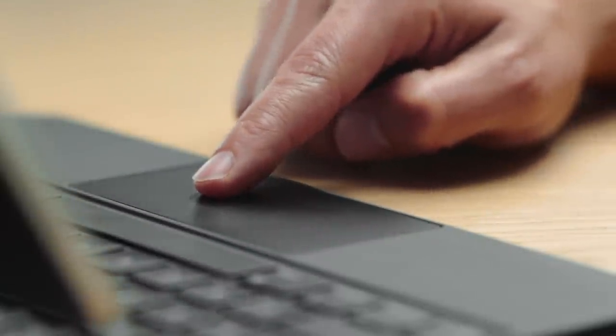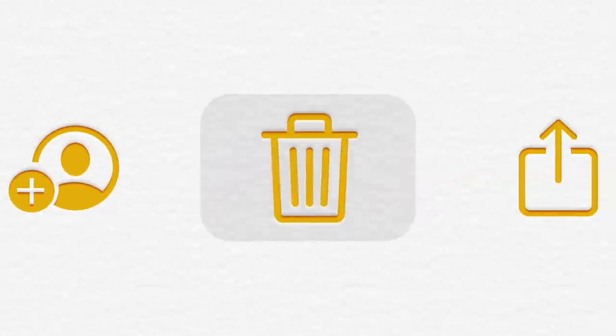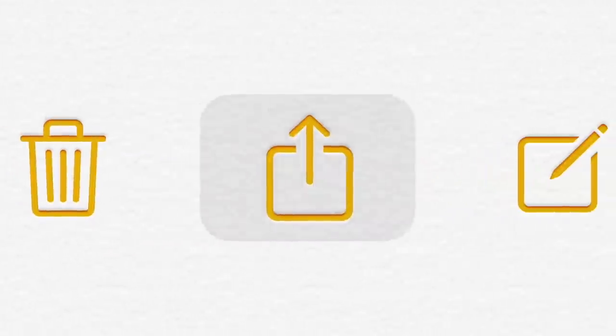Now, in bringing mouse and trackpad support to iPadOS, we deeply considered the best way to bring a cursor to a touch-first environment. Let me show you how it works. You notice that the shape of the cursor is the one most natural for a touch experience — it's round, just like your fingertip. But check this out: as you move over the controls, it automatically transforms to make them easy to select.